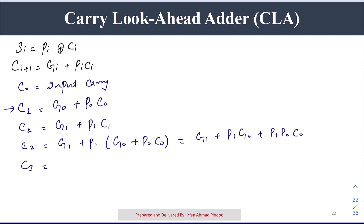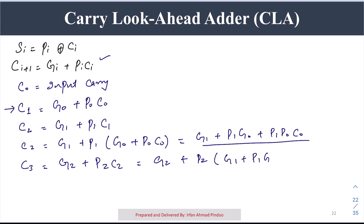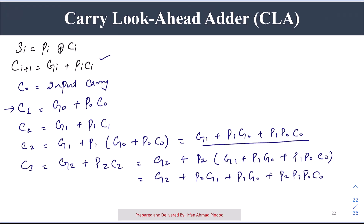C3 = G2 + P2 * C2. Substituting C2, we get C3 = G2 + P2*G1 + P2*P1*G0 + P2*P1*P0*C0. So all carries are now fully expanded in terms of the primary inputs.